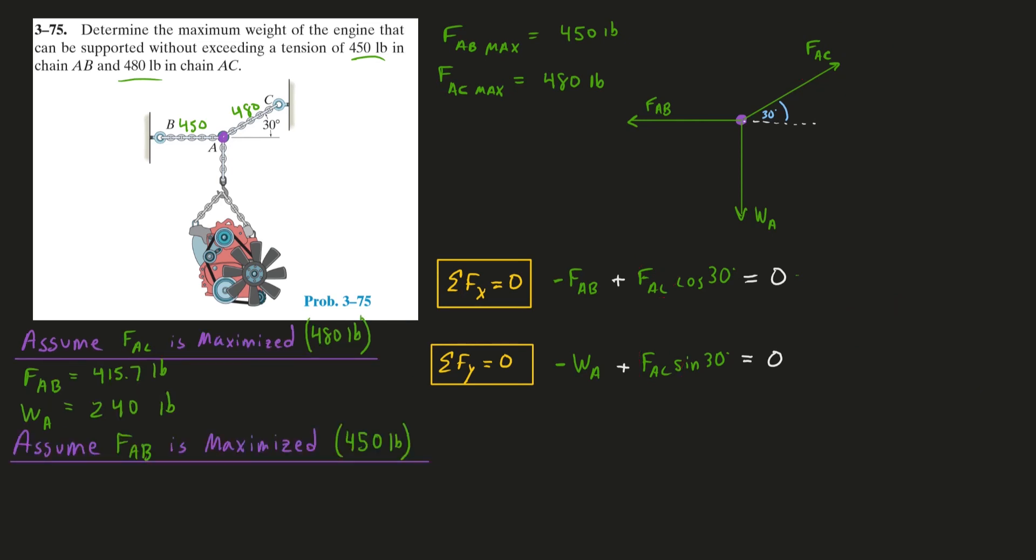So now let's do the opposite. Let's assume that force AB is operating at its maximum. So we'll plug in 450, and for this, we'll do our math, and we'll solve for force AC and the weight.